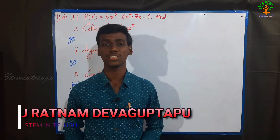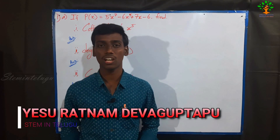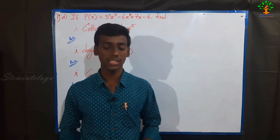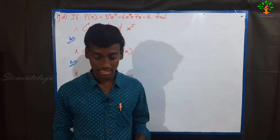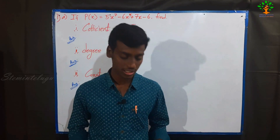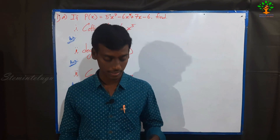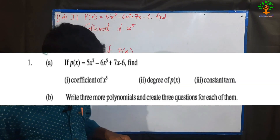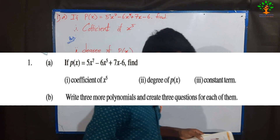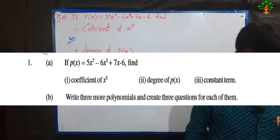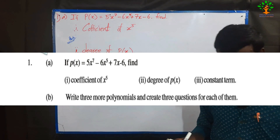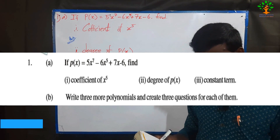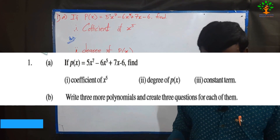Welcome students, this is A.S. Rathna. We will talk about the first chapter in this video. The first problem: if P of x is equal to 5x power 7 minus 6x power 5 plus 7x minus 6, then find the coefficient of x power 5, the degree of P of x, and the constant term.